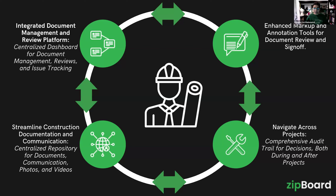Utilizing powerful markup and annotation features can streamline your sign-off processes. We have electronic stamp capabilities which you'll see in Bhavya's demonstration. It allows you to navigate project decision-making with full audit trails for enhanced oversight and accountability. The platform is easy to navigate — you don't need extensive training. When you send a link to external stakeholders, they can seamlessly go through all the reviews and markups.